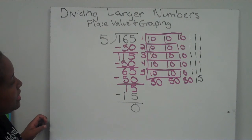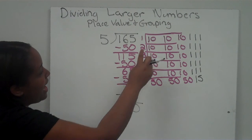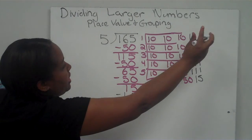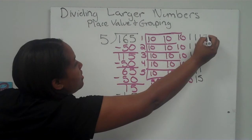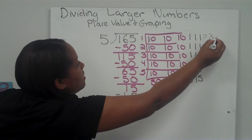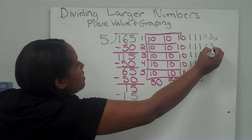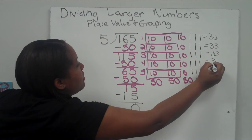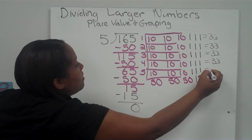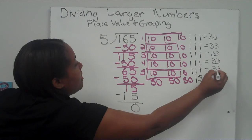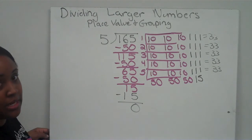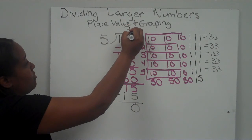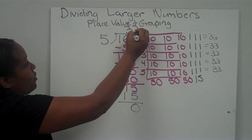So I see that in each group I have 10, 20, 30 — and 3 ones. I didn't have to do it that many times; I just chose to. So my quotient is 33 — in each group there are 33.